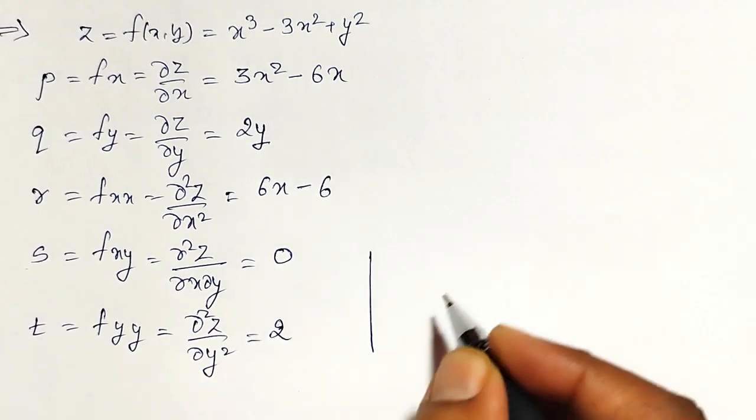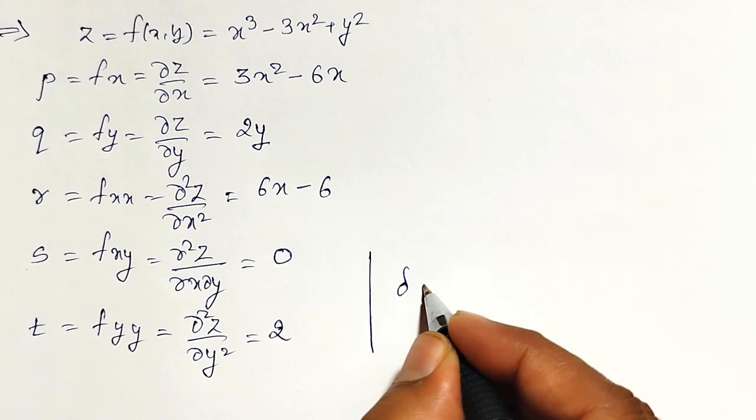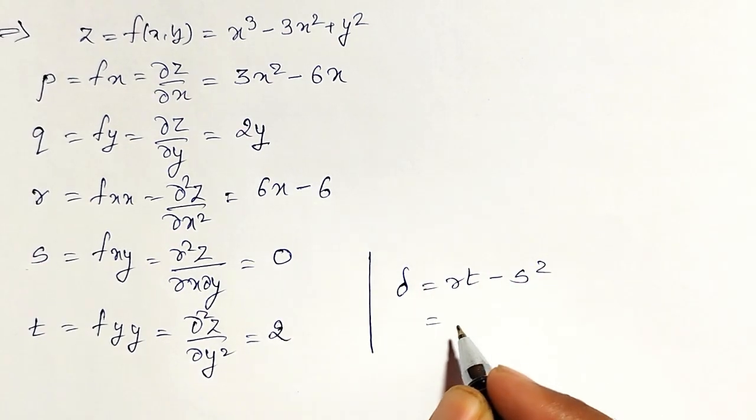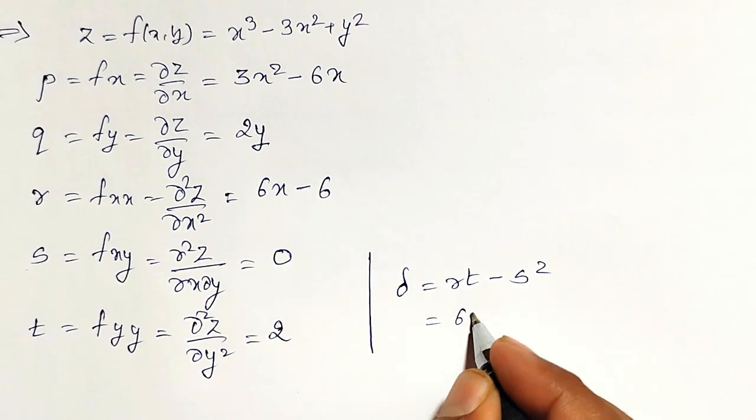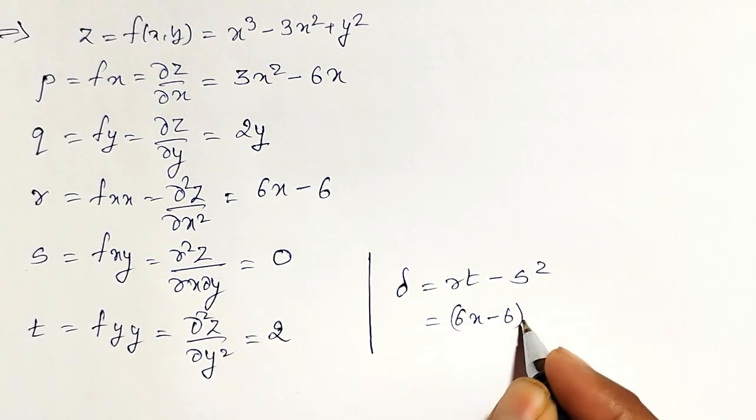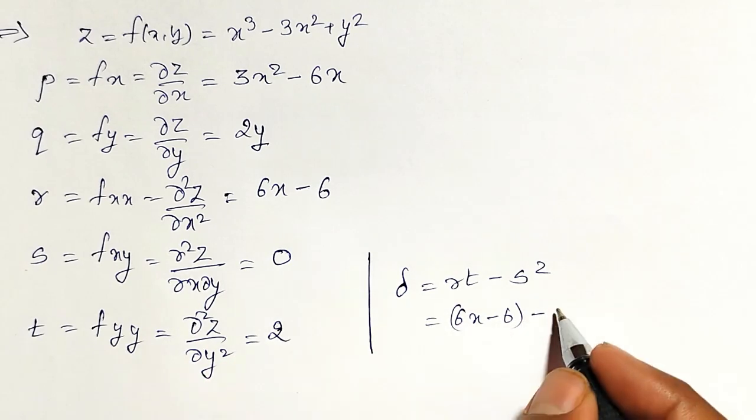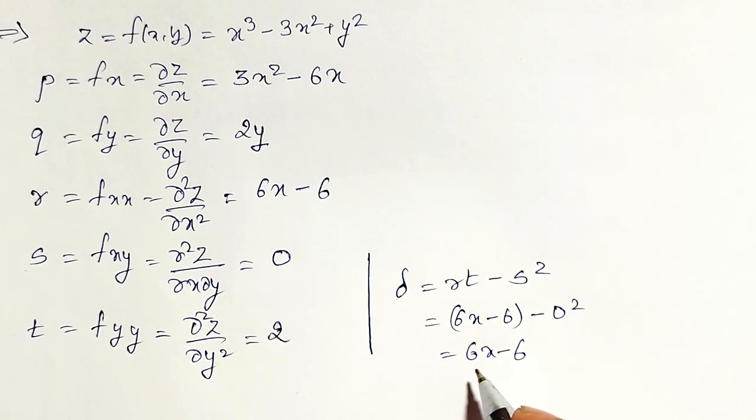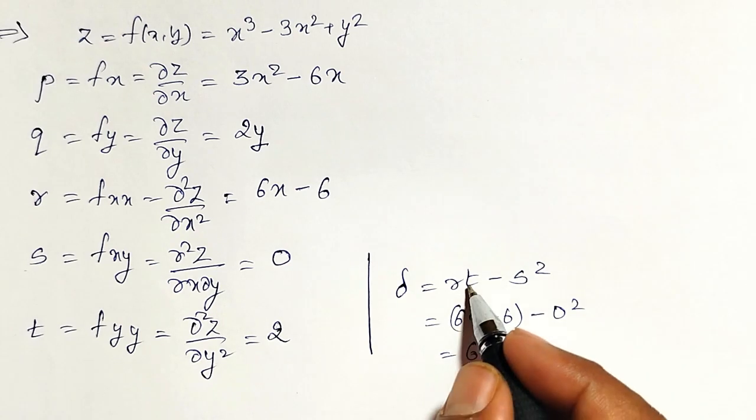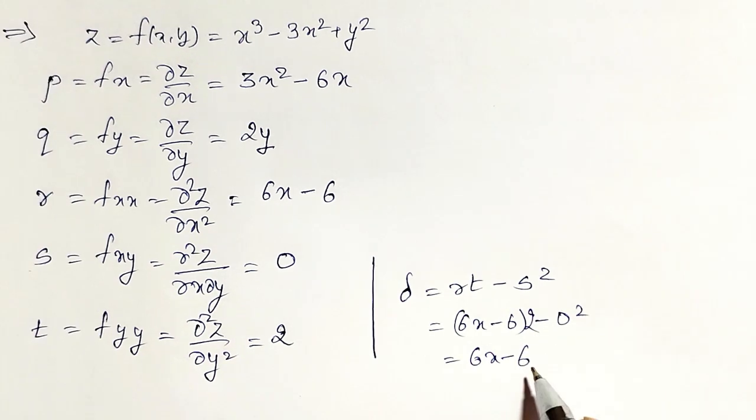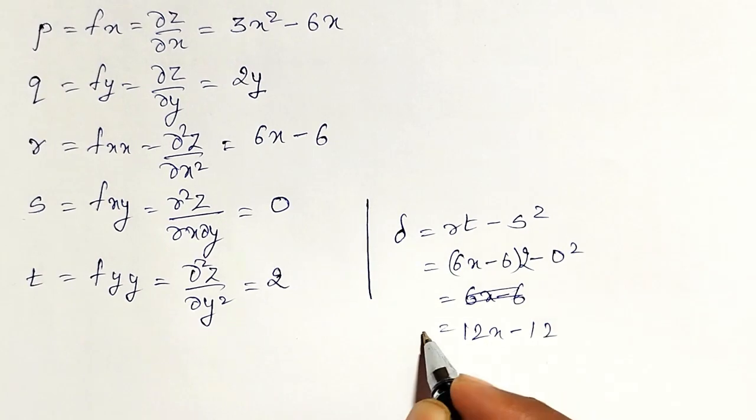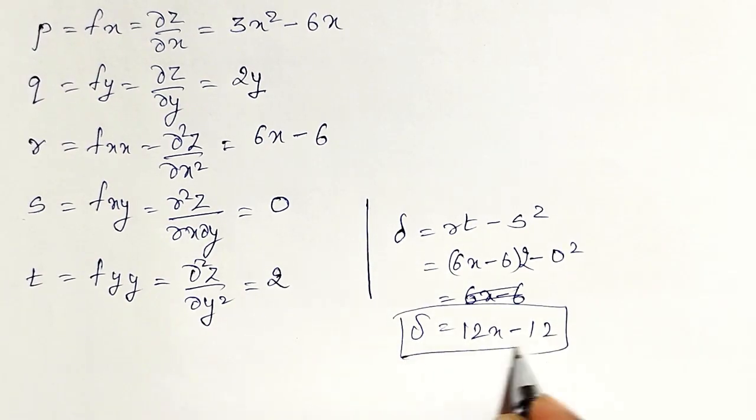For our convenience, this delta also I can calculate and keep it. Delta equal to rt minus s square. What is my r? r is 6x minus 6 minus s square. s square is 0 square. t is again 2 here. Therefore, it will become 12x minus 12 is my delta.